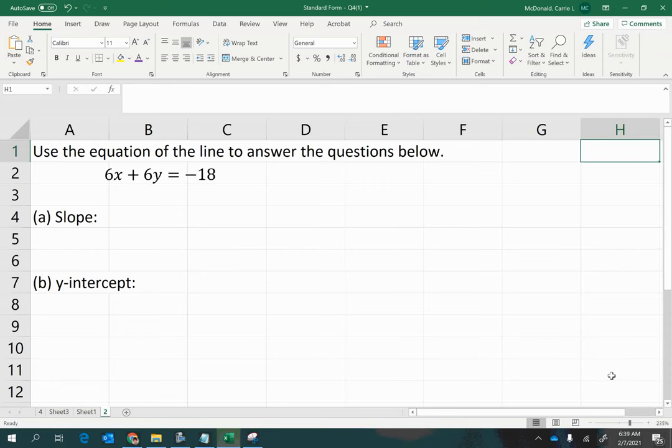Use the equation of the line to answer the questions below. We have the equation 6x plus 6y equals negative 18. This is in standard form, or sometimes called general form, where the x term and y term are both on one side of the equals and the constant term is on the other side of the equal sign.